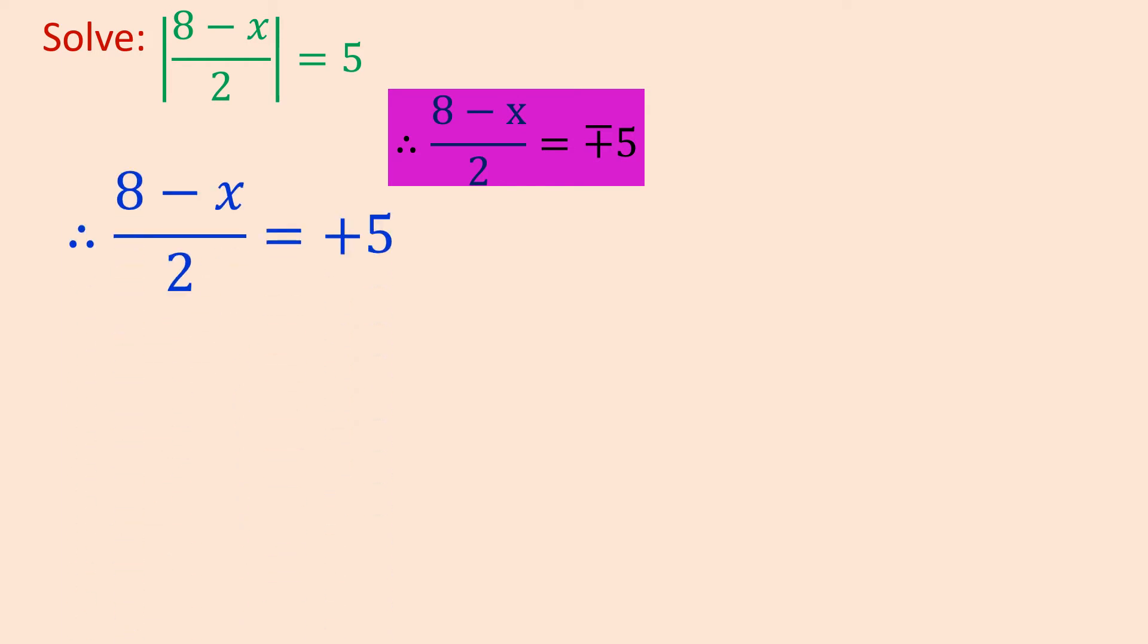8 minus x upon 2 equals to plus 5, or 8 minus x upon 2 equals to minus 5.